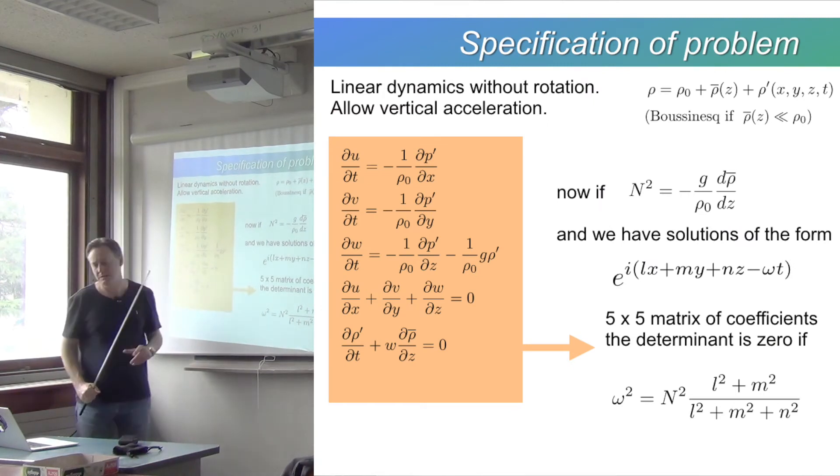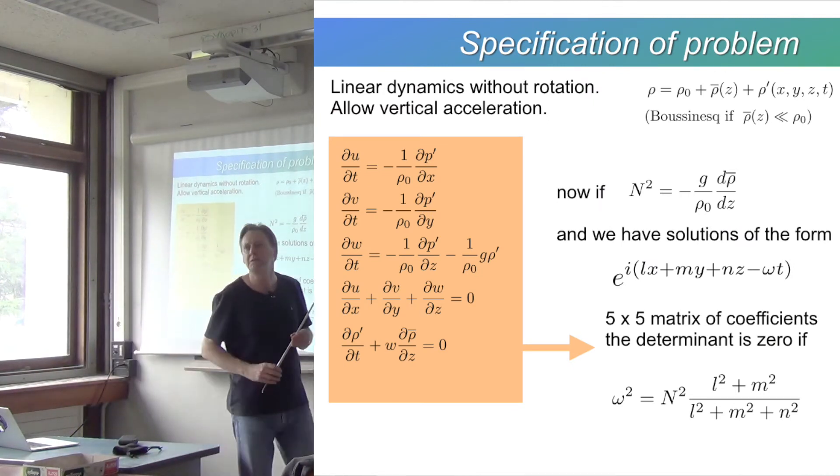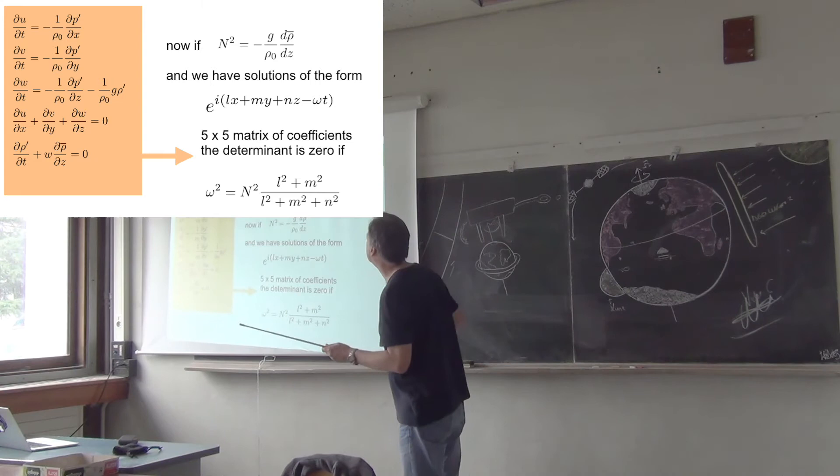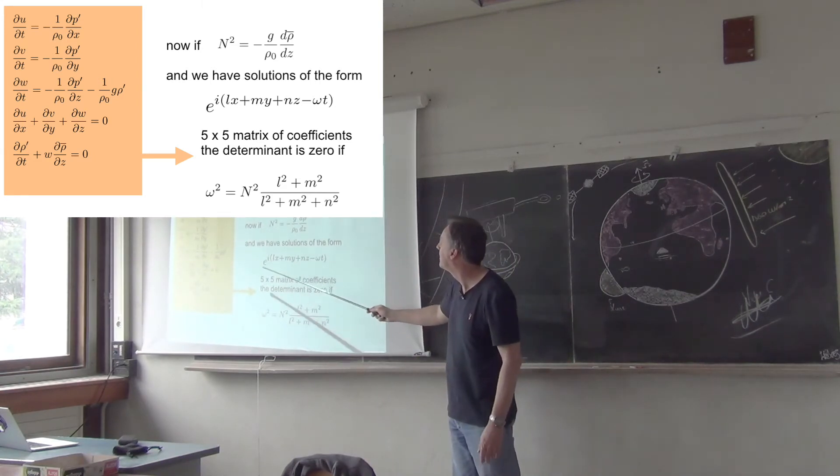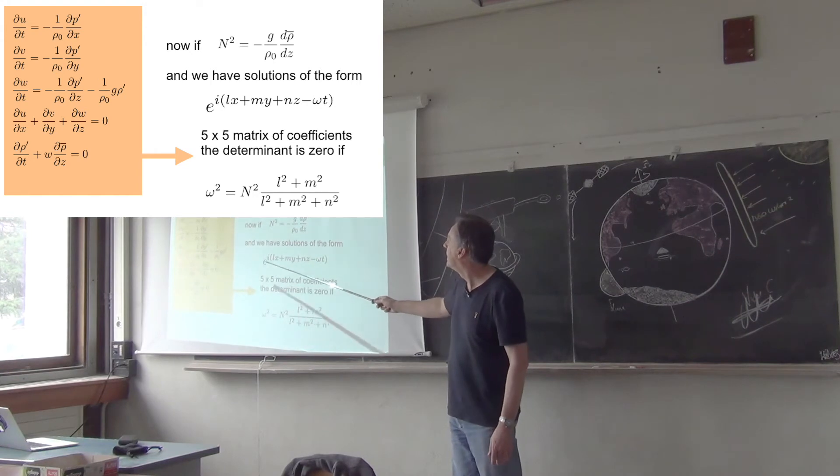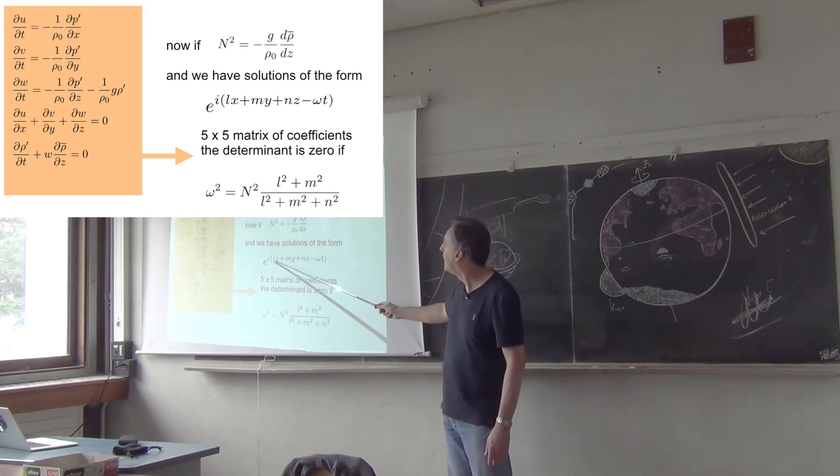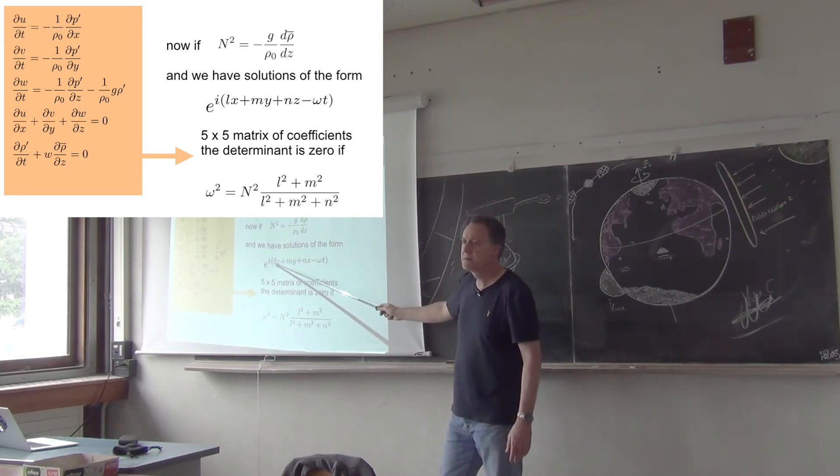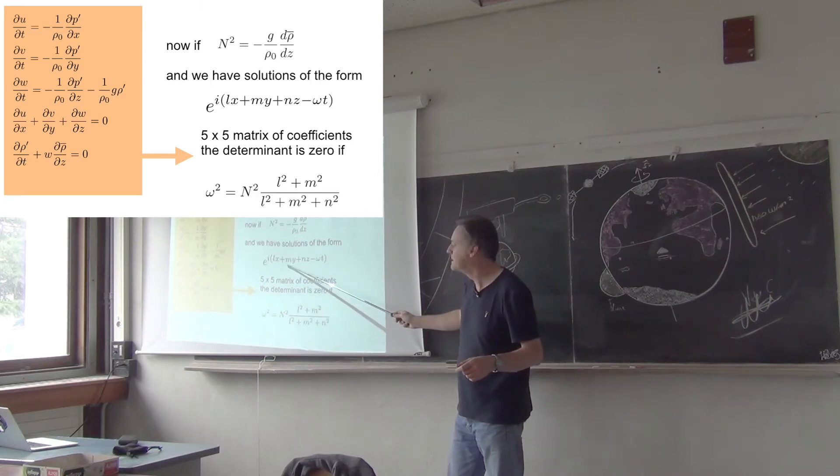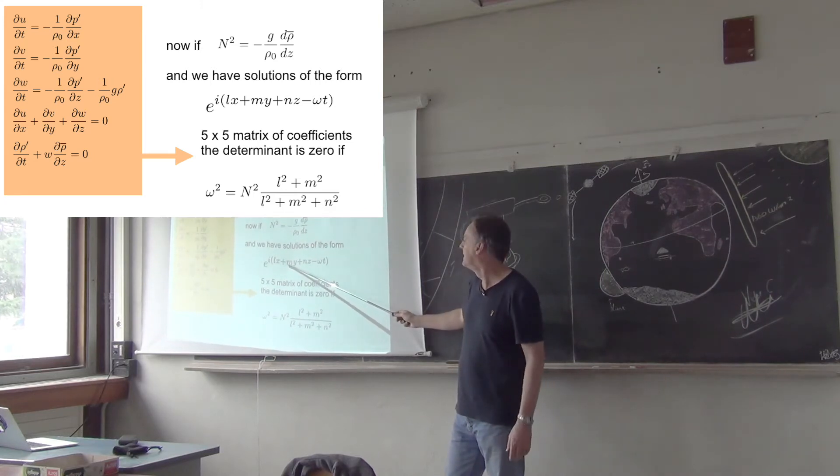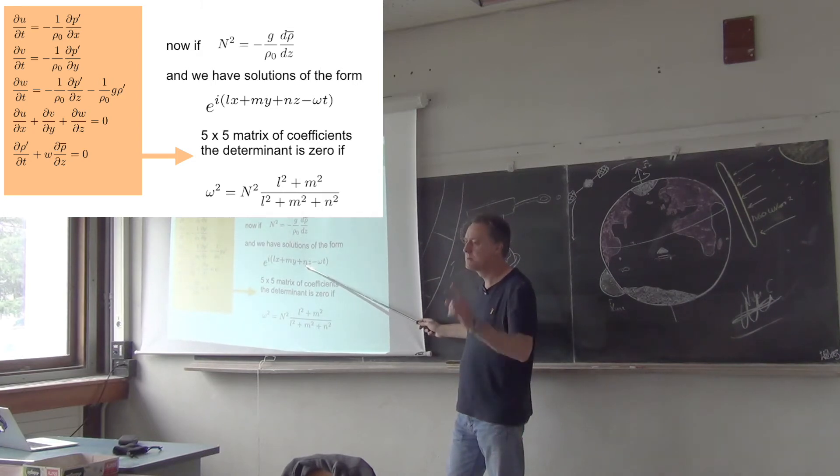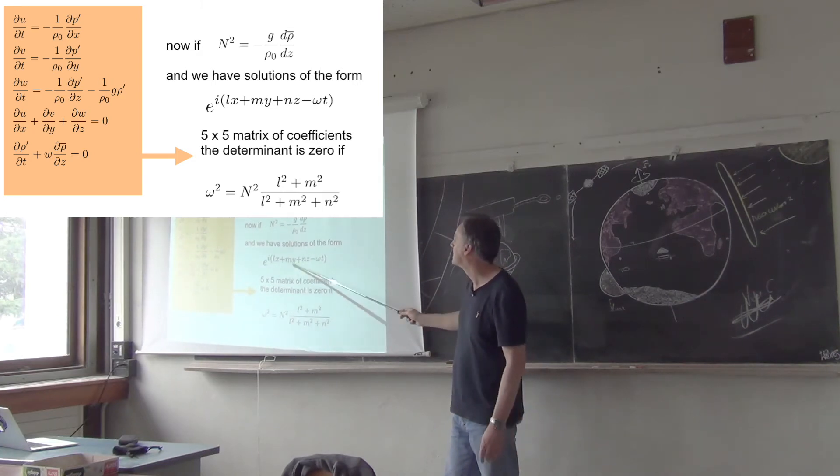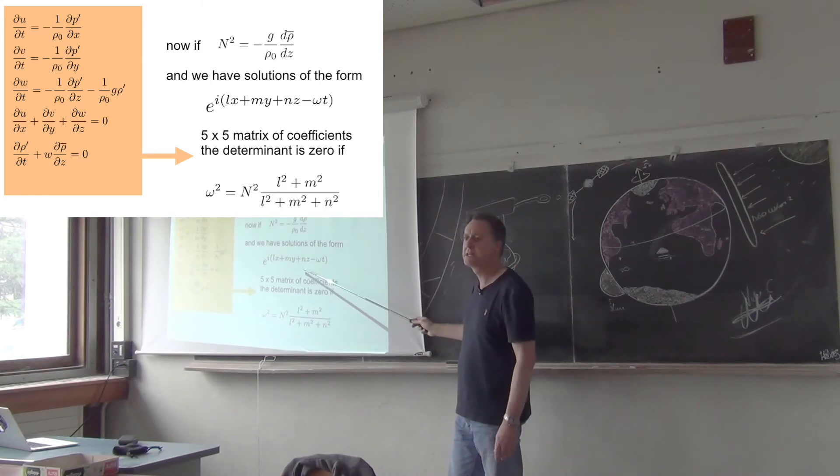Well, I'm not going to show you the details. It's the same procedure we used before. Basically, what we say is the solutions look like this. So, it's e to the i times lx, my, nz. So, l is the wavenumber in the x direction. m is the wavenumber in the y direction. And n is the wavenumber in the z direction, the vertical wavenumber. So, that's a wave which propagates in three dimensions. ω t, ω is the frequency.